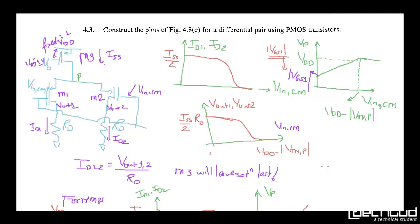Hello everyone, this is Ankit Shivale and today we are going to solve problem 3. Your question is: consider the plots of figure 4.8c for a differential pair using PMOS transistors.